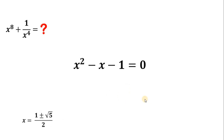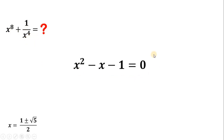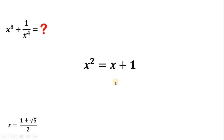Let's set aside this result. Now, we want to find x raised to 8 plus 1 over x raised to the fourth power, so we're going to manipulate the quadratic equation to get x to the fourth power and x to the 8th. First, add x and add 1 on both sides. This gives us the value of x squared as x plus 1. Let's set aside this result.